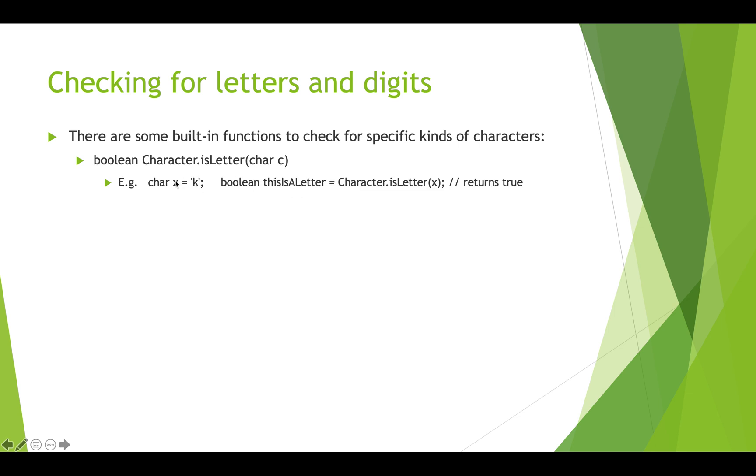In this case if char x equals k and we call Character.isLetter of x and assign the result to thisIsALetter, then thisIsALetter would actually become true because k is a letter. If char x was actually the plus sign then thisIsALetter would become false.